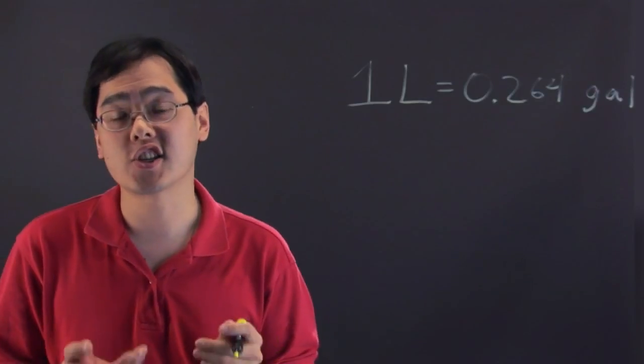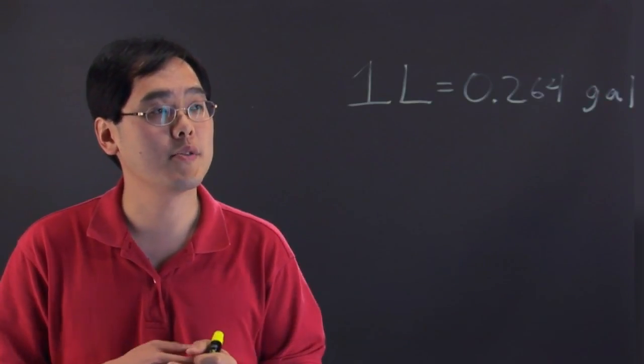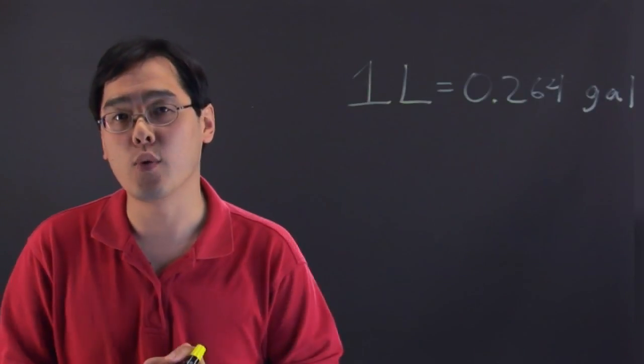That's right, one liter is actually just a little more than a quarter of a gallon. So basically, one gallon is going to be around four liters.